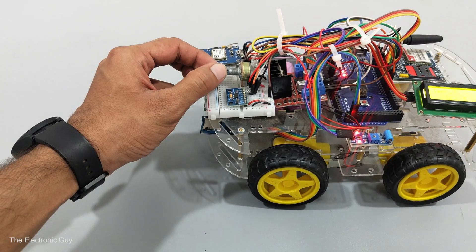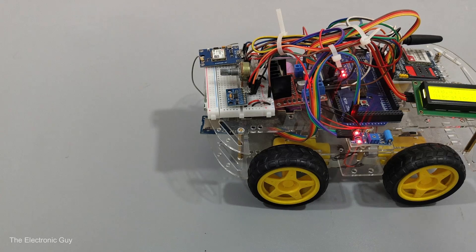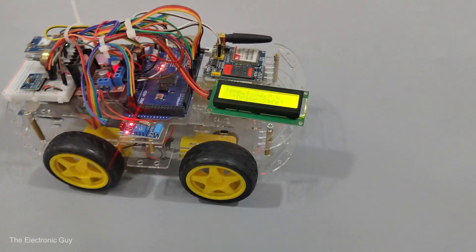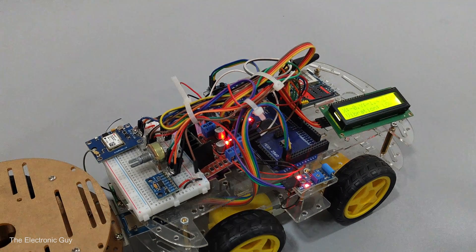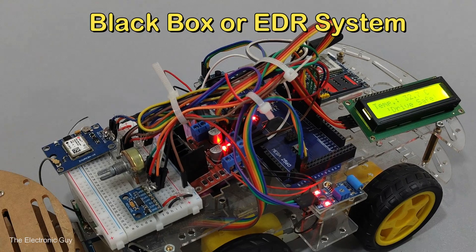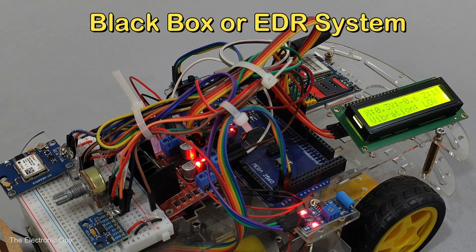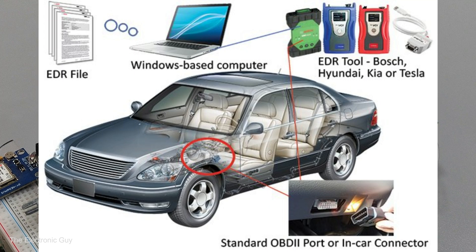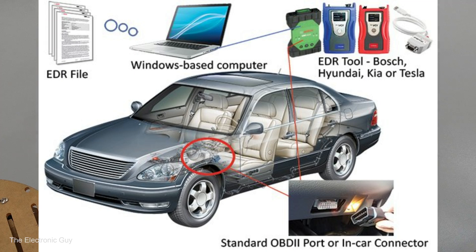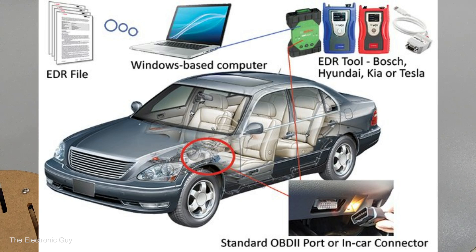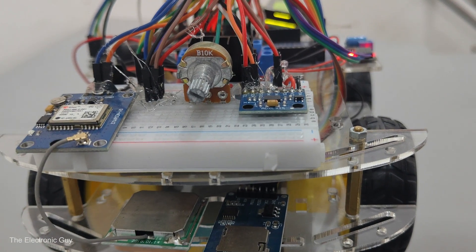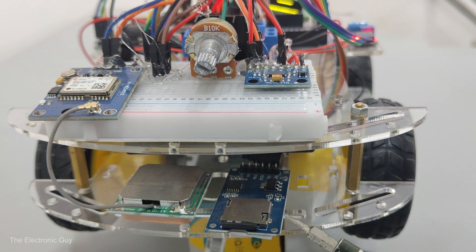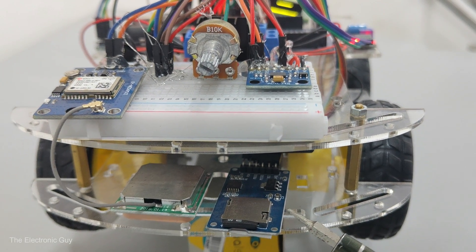It is very crucial to know the car parameter values when the accident happened so that engineers can analyze the data and reason for the accident. For this, there is a black box system installed in all cars, which is usually hidden in a very safe location. This black box is shielded in such a way that it can withstand harsh environments such as fire or explosion. To imitate this, I also have a black box here at the bottom of the car. The SD card module saves the car parameters data as soon as an accident is detected.